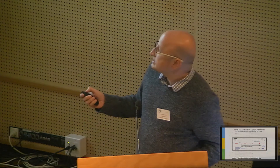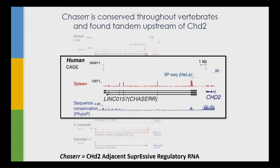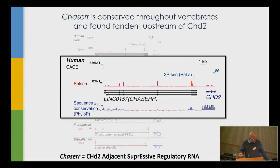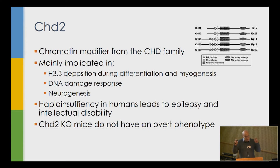If we zoom in, it has a single promoter, a single polyadenylation site, about 2 kb upstream of CHD2, and its sequence is quite well conserved. What is CHD2? It's a chromatin modifier from the CHD family, which has about 12 other members. It's a protein that uses ATP to move nucleosomes around. It has been implicated in a variety of processes, including positioning of an unstable variant of histone H3.3, and response to DNA damage.